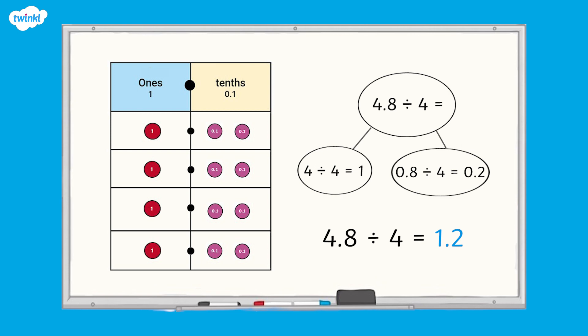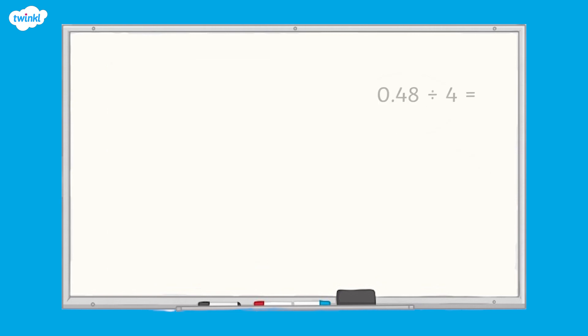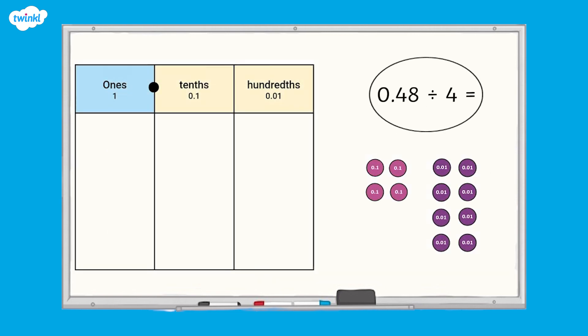If you have place value counters and a place value chart, you could use them to check the answer to 0.48 divided by 4. If you don't have the equipment, you could draw a part-whole model to show your answer.